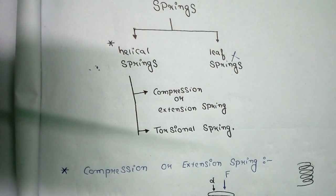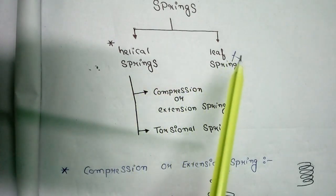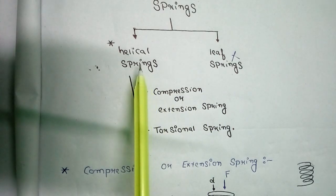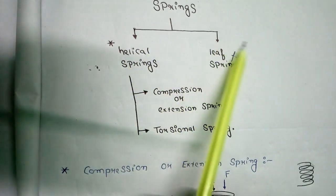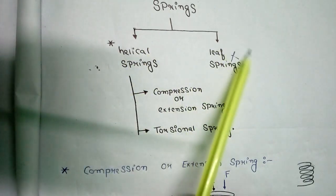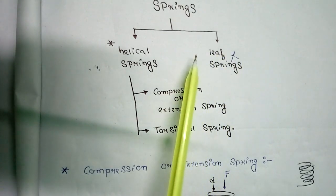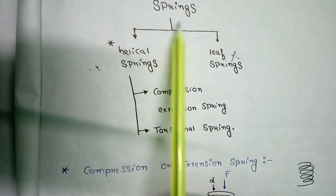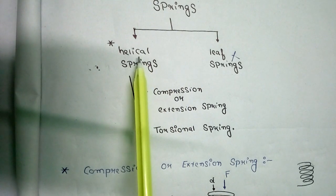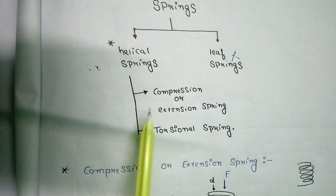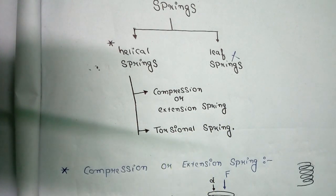Regarding the classification of springs, springs can be classified into two categories: one is the helical spring and the other is the leaf spring. From the exam point of view — GATE, Engineering Services, and PSU exams — the helical spring is the only important part you need to study; the leaf spring is not important. Helical springs can be further classified into compression or extension springs and torsional springs.